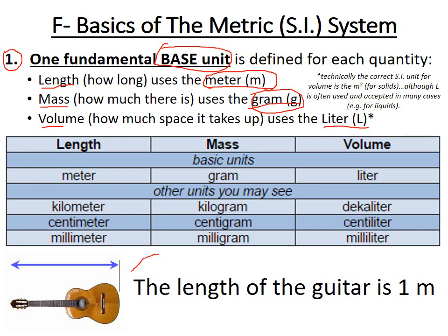For example, a guitar has a length of one meter, so we measure length in meters — not grams. For length we have the meter, and variations like kilometer, centimeter, and millimeter are all based on the meter, so it's very straightforward to convert between them. For mass you have the gram with variations like kilogram, centigram, and milligram — all related to the gram by some factor. For volume we have the liter with its variations, all related to each other. You don't have to worry about too many complex conversions because there's only one base unit per quantity.